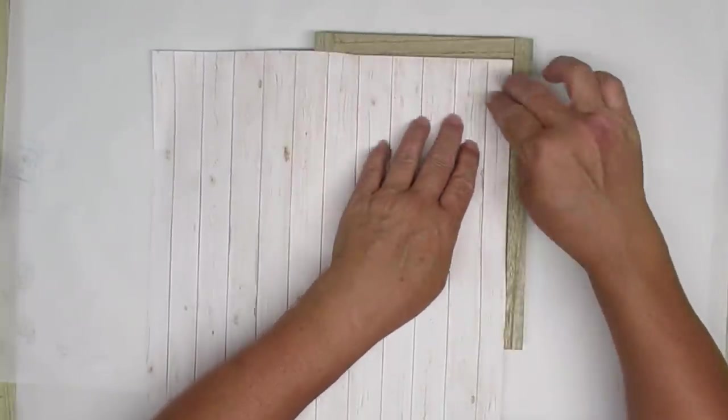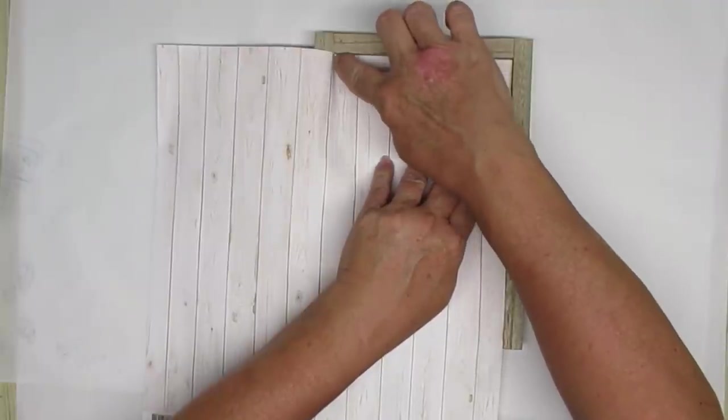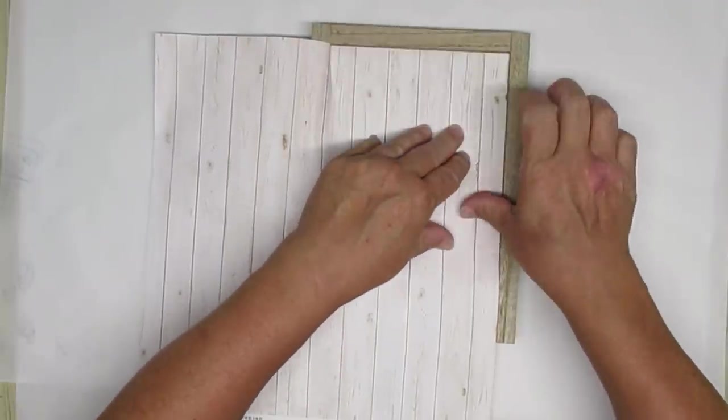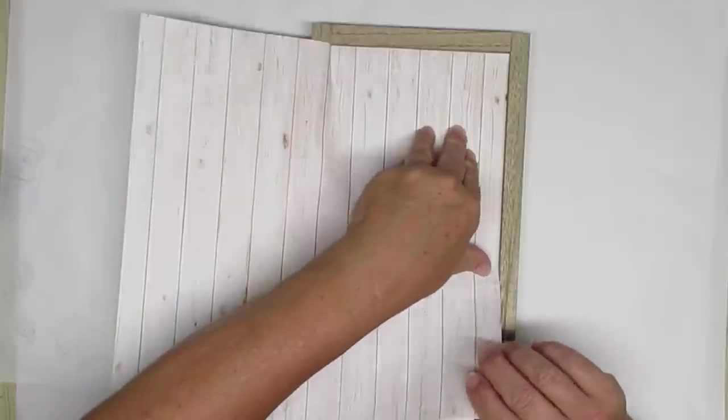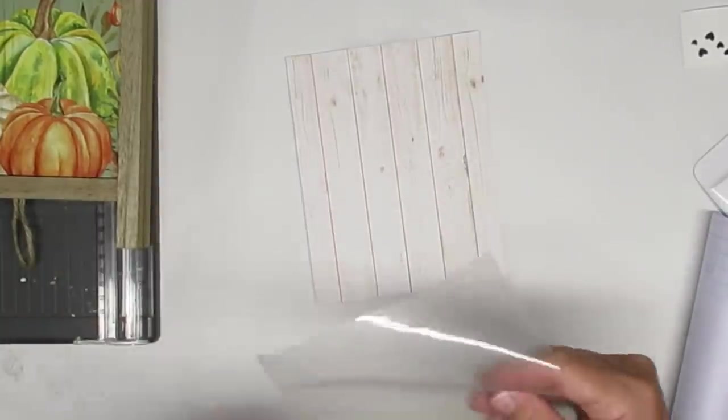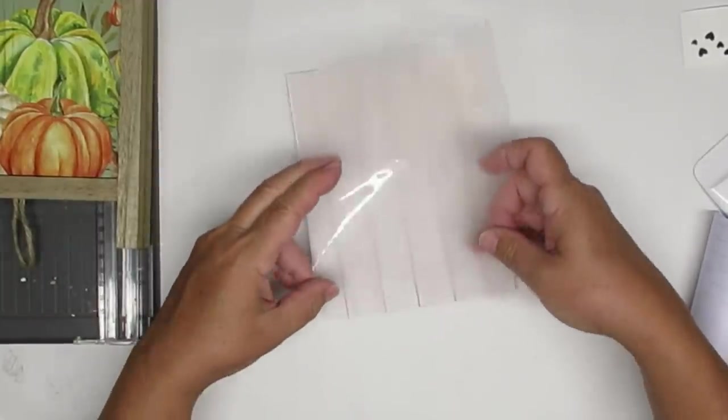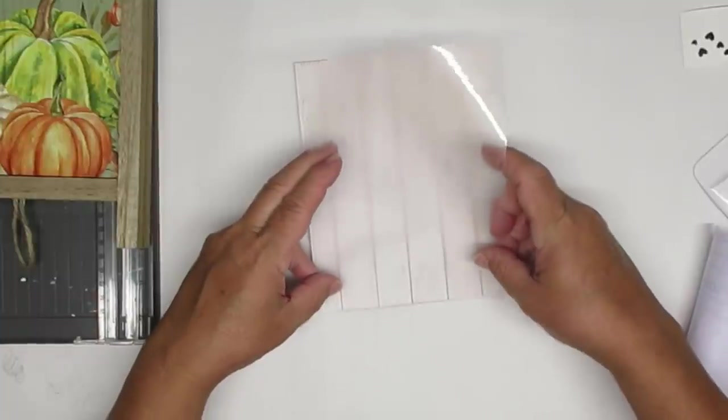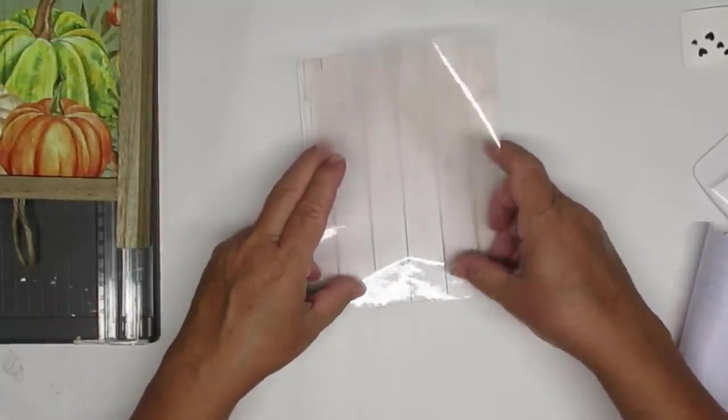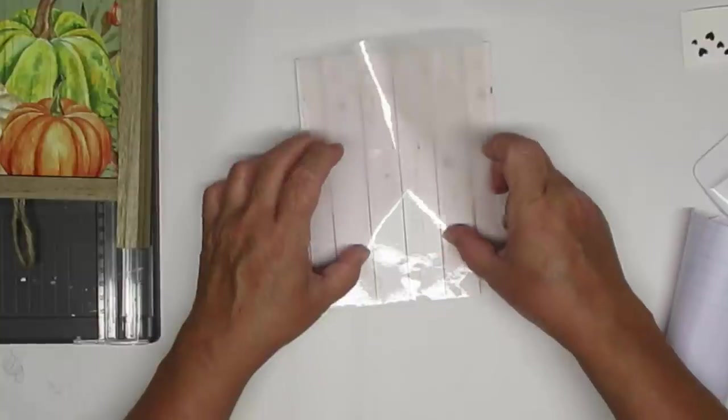So I've decided to take some of this scrapbook paper from Michael's which is in a shiplap design and just mark out where I need to cut it. I'm doing something a little different with the paper. I've decided to put some clear shelf liner over it so when I put my Cricut Design vinyl on it it doesn't tear the paper.